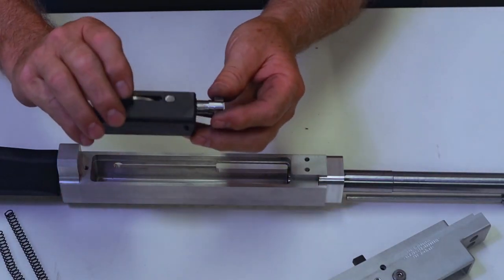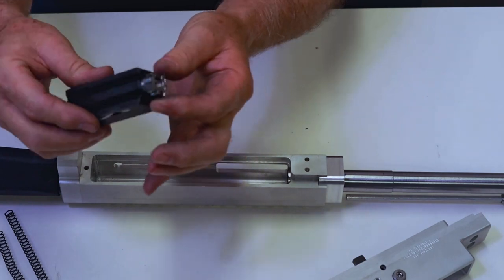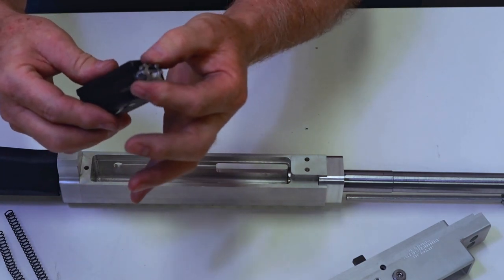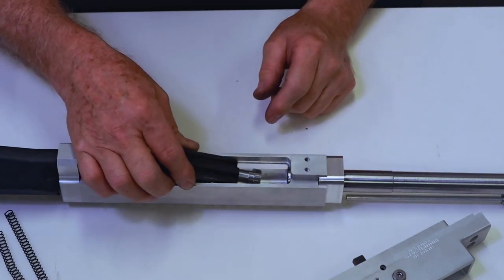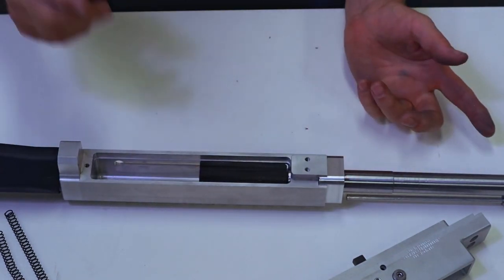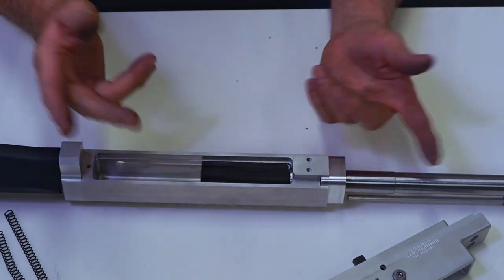Assembly is the same way. Bolt carrier and bolt. Just make sure it runs freely. Pull the bolt out. Drop it in. It goes in. Locks. All good.